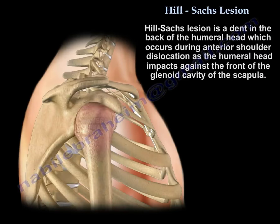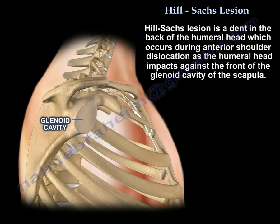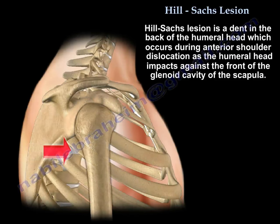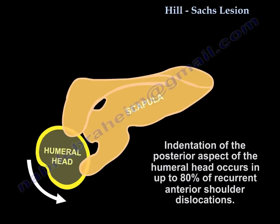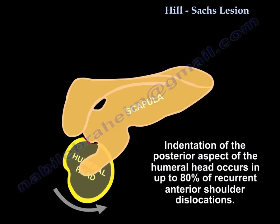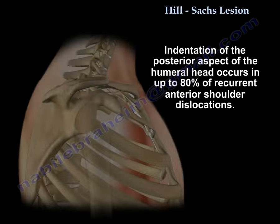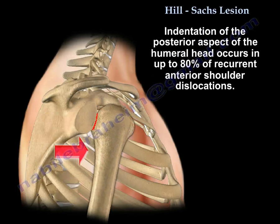A Hill-Sachs lesion is a dent in the back of the humeral head, which occurs during anterior shoulder dislocation, as the humeral head impacts against the front of the glenoid cavity of the scapula. This indentation of the posterior aspect of the humeral head occurs in up to 80% of recurrent anterior shoulder dislocations.